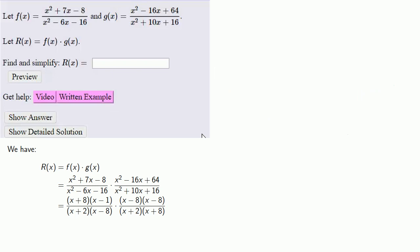So now we can remove those common factors. And what's left is x minus 1 times x minus 8 over x plus 2 times x plus 2.